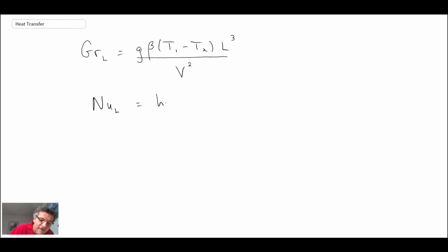Nusselt number is going to be evaluated again using L as the characteristic length scale. Through Fourier's law, the q double prime would be watts per square meter, and it's just H times T1 minus T2.